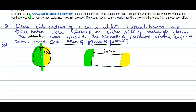So what will be the diameter? We know diameter is equal to two times the radius. So it is 2 × 4 = 8 cm. So the breadth of this rectangle becomes 8 cm.